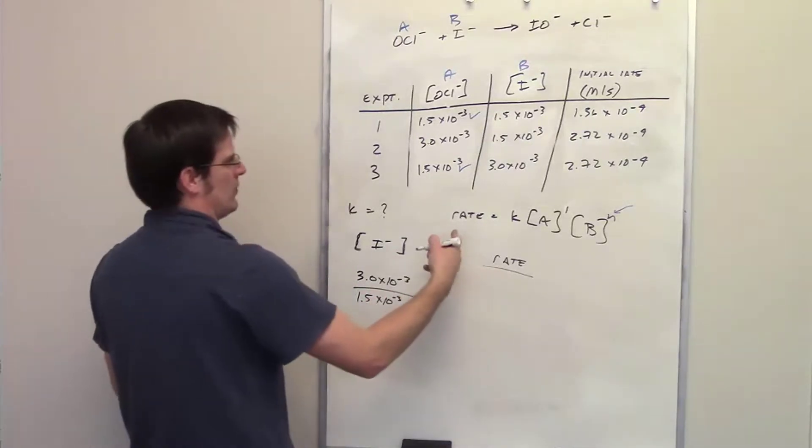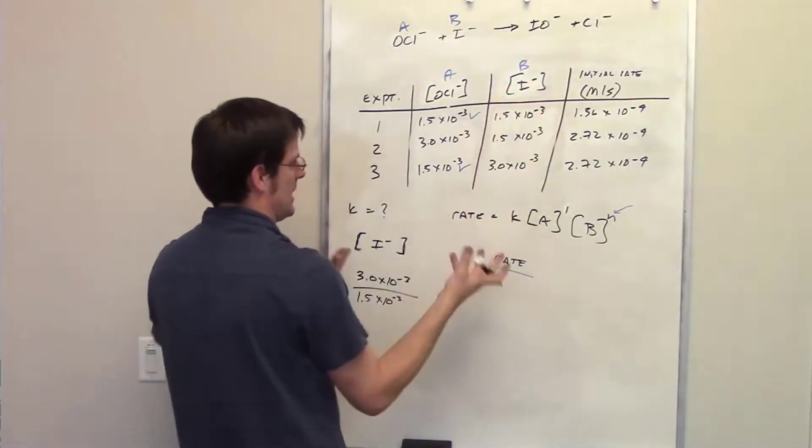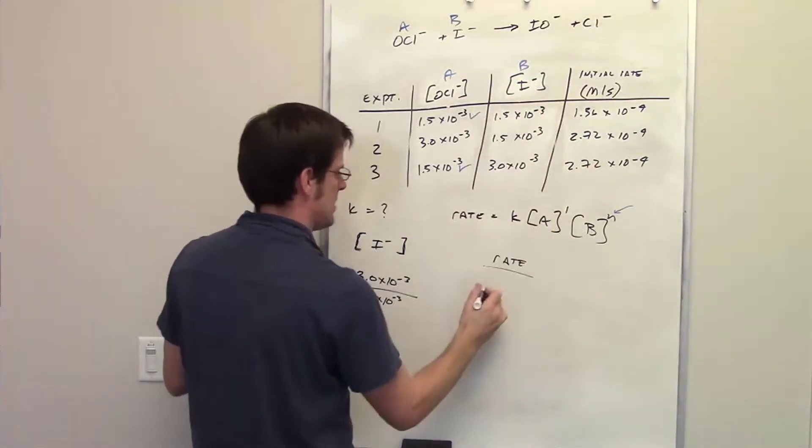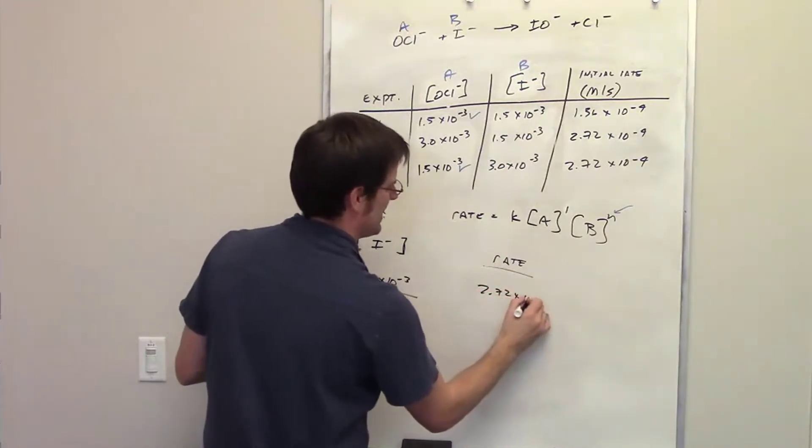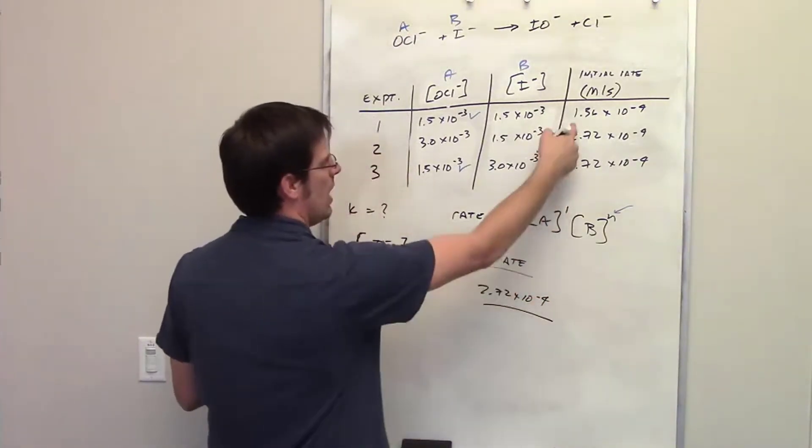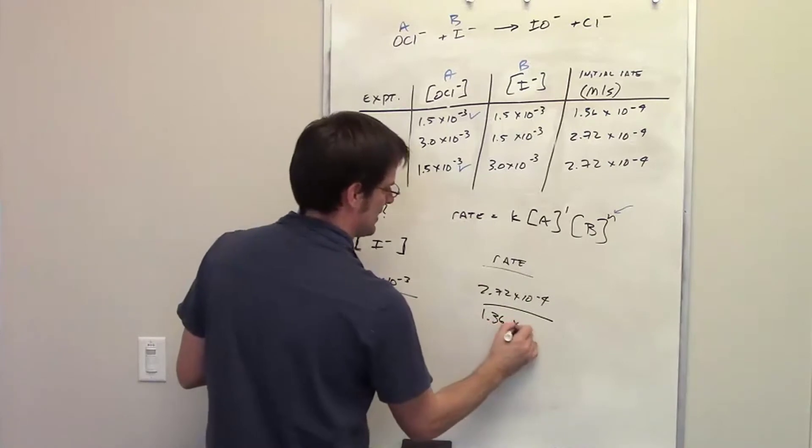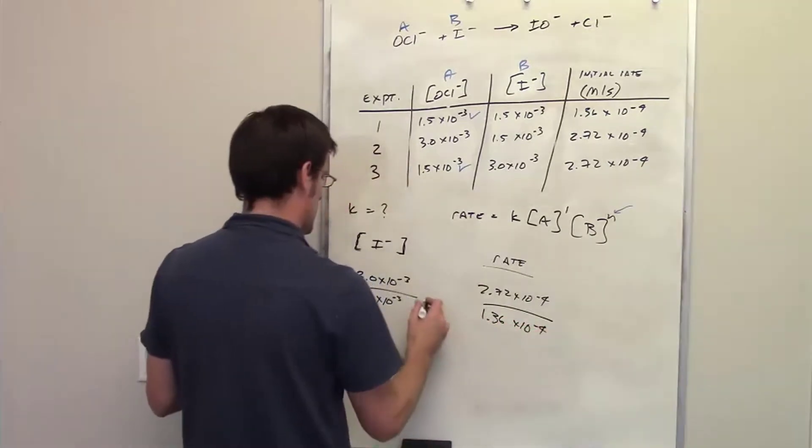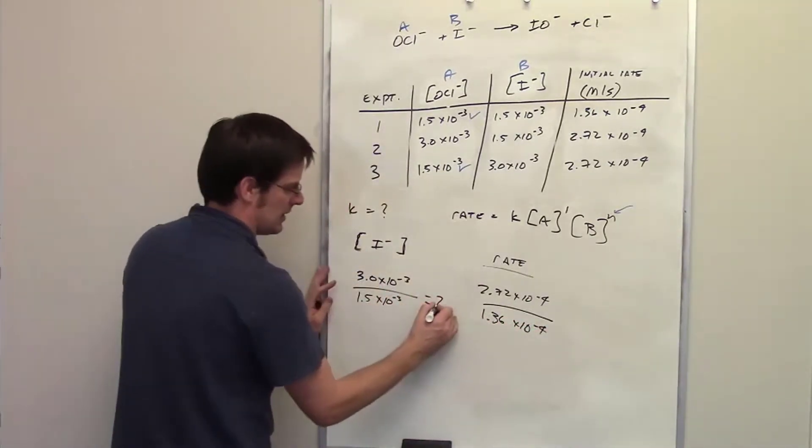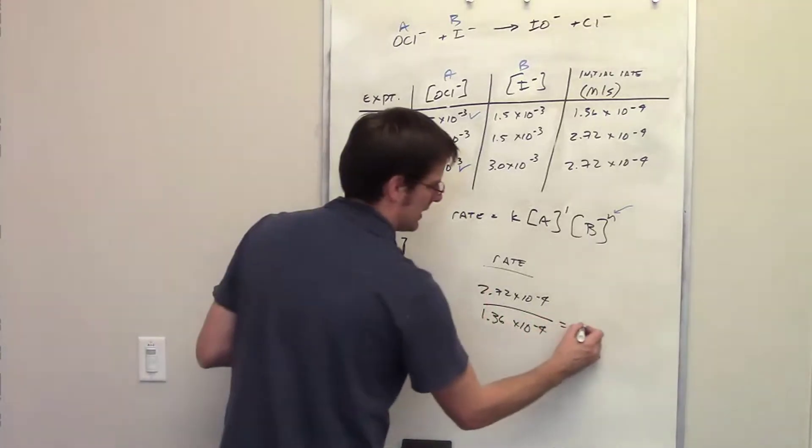So what were the rates for when those changes were made? Well in experiment 3, the rate was 2.72 times 10 to the negative 4. In experiment 1, it was 1.36 times 10 to the negative 4. So if I take this, divide it by that, it comes out to be 2. If I take this, divide it by that, it comes out to be 2.